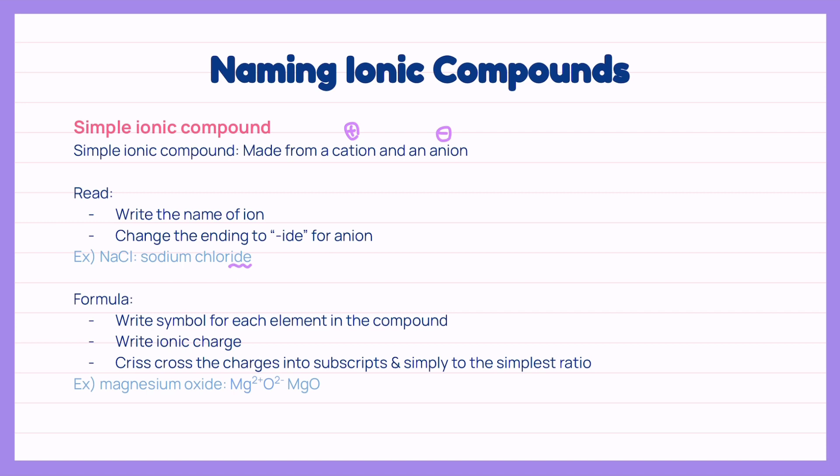To write a formula for these simple ionic compounds, we write the symbol for each element found in the periodic table. Then we figure out the charge and write it as a superscript. Crisscross the charges into subscripts and simplify into the simplest ratio.